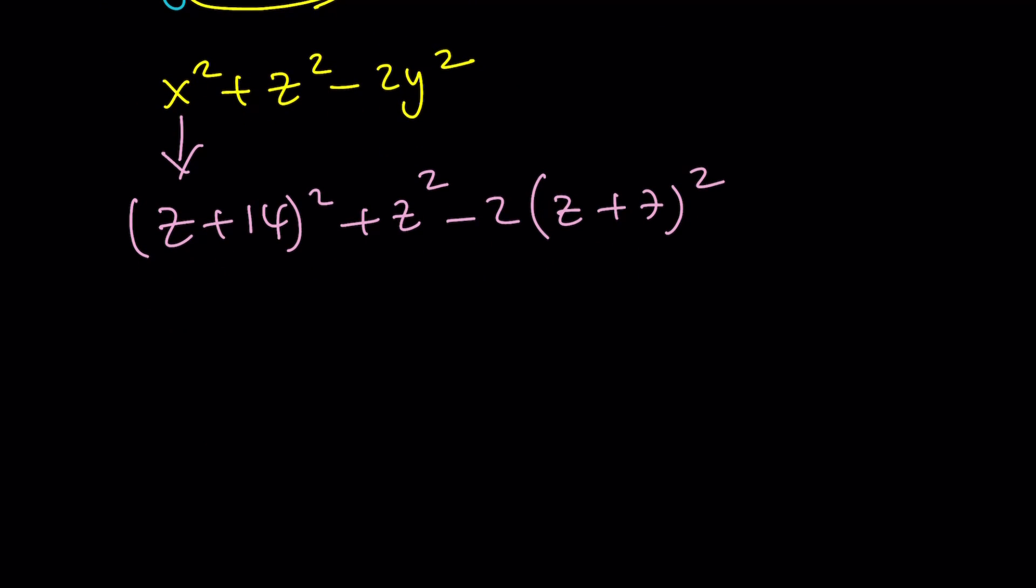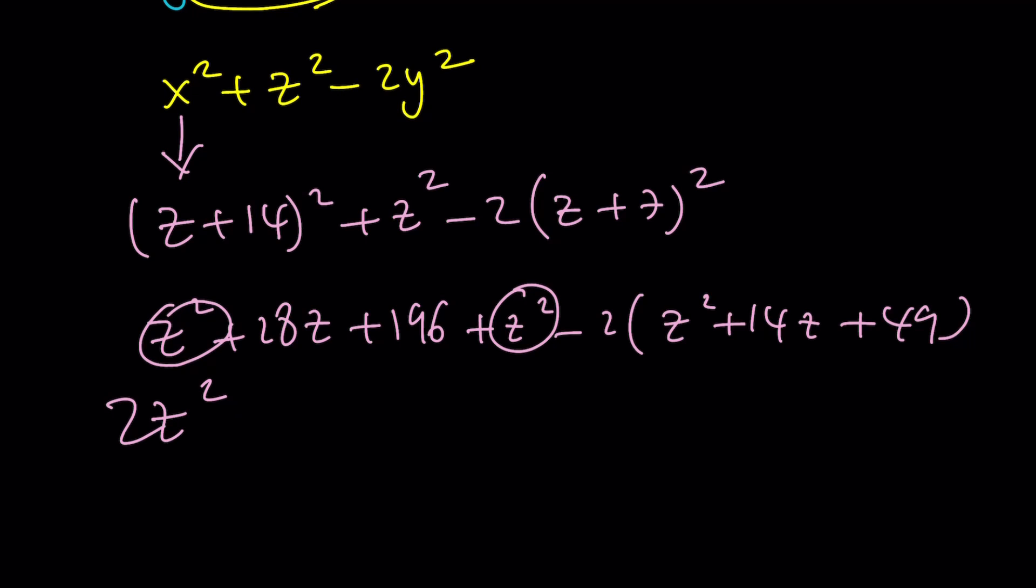Replace x with z plus 14 squared plus z itself squared minus 2 times y squared, which is z plus 7 squared. Let's go ahead and expand everything and simplify. z squared plus 28z plus 196 plus z squared minus 2 times z squared plus 14z plus 49. If you distribute the 2, we get minus 2z squared minus 28z minus 98.